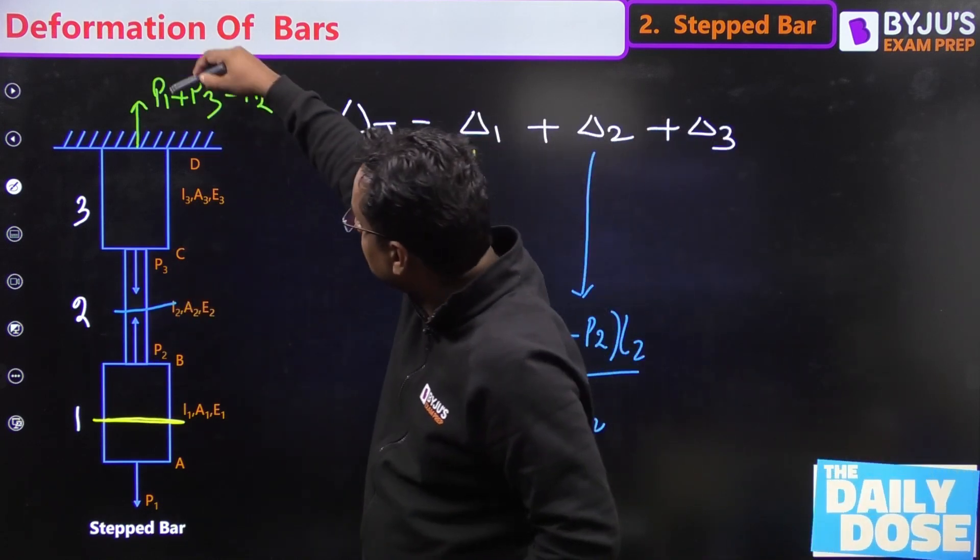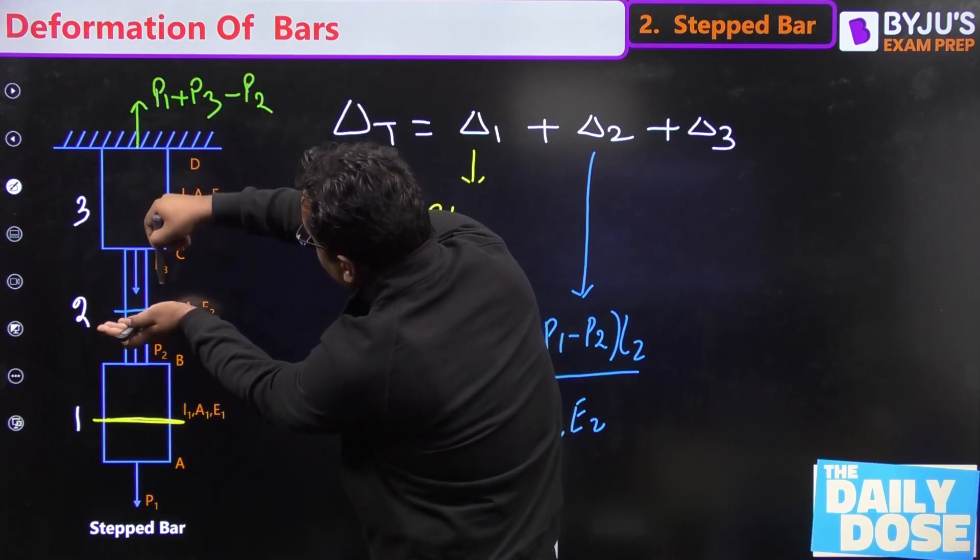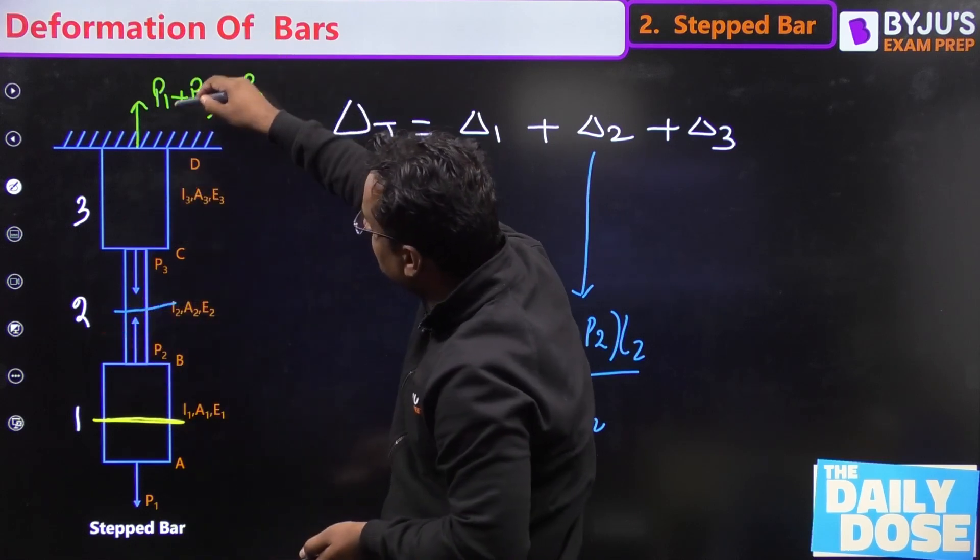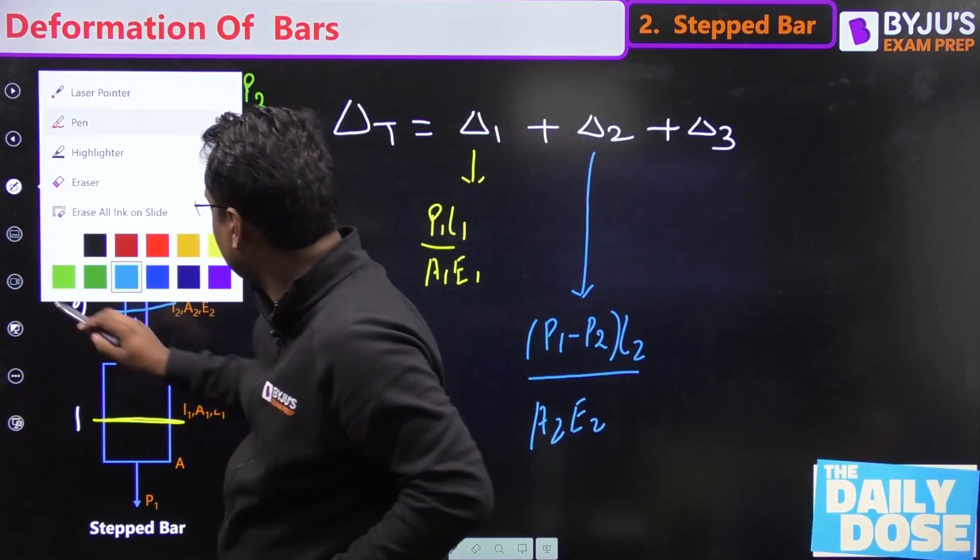If you see from top also, this is plus because going away from the section, this is coming inside so minus. So this P3 will be cancelled out. Again it will be P1 minus P2. So you see from top or bottom it will be same.